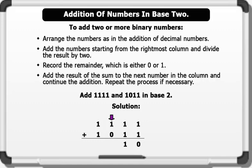1 plus 0 plus 1 equals 2. 2 divided by 2 equals 1 remainder 0; we write down 0 and carry 1. 1 plus 1 equals 2; 2 divided by 2 equals 1 remainder 1; we write down 1, and since there is nothing more to add we bring down the remainder 1. Therefore 1 1 1 1 1 plus 1 0 1 1 in base 2 equals 1 1 0 1 0 in base 2. That's brilliant!